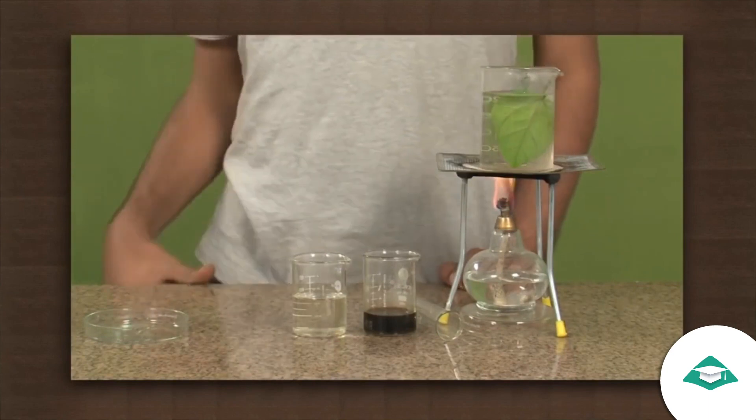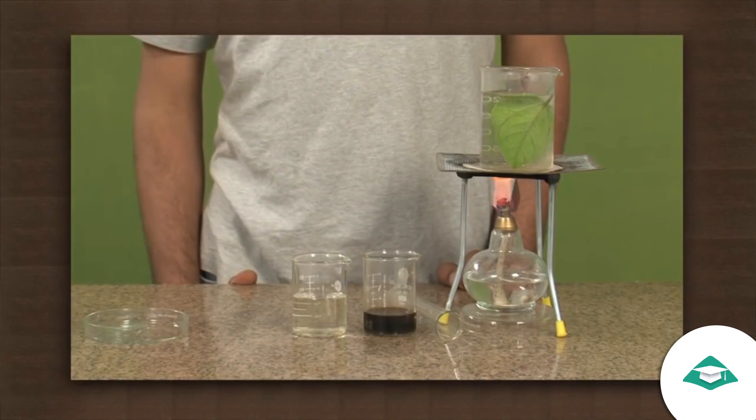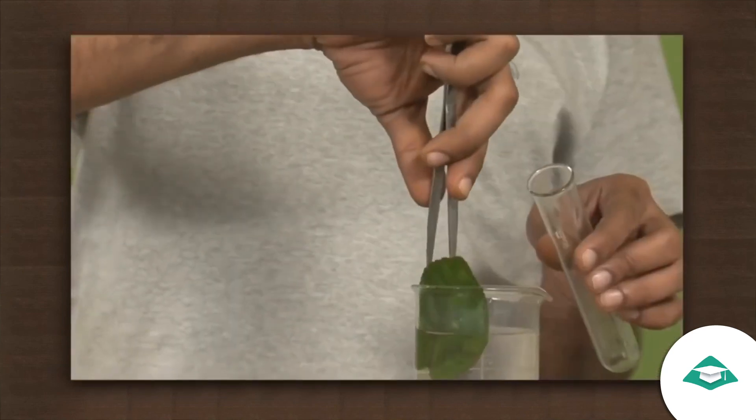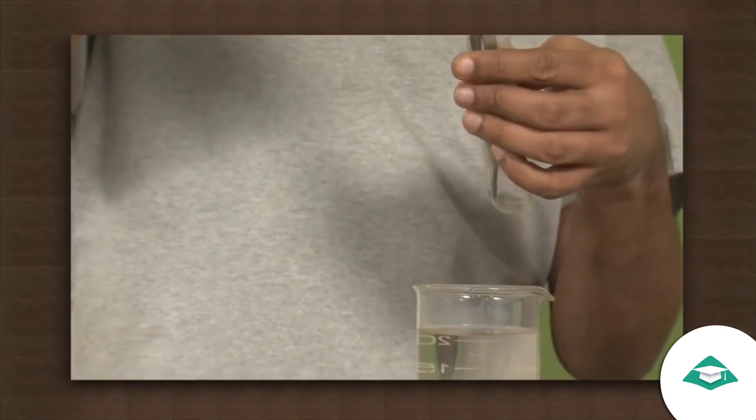Continue heating until the cell wall becomes soft. The cell wall should become soft because iodine needs to be absorbed into the leaf properly. Now take the leaf out of the water and place it inside the test tube.